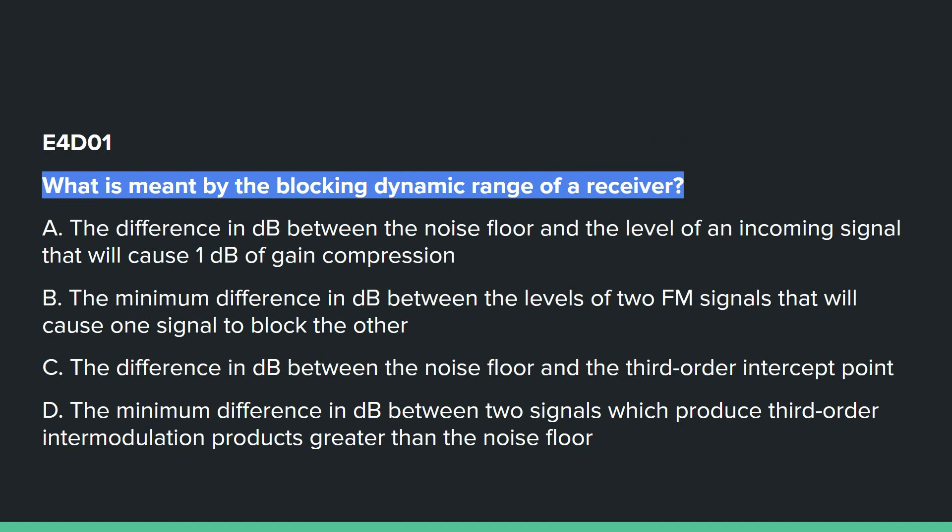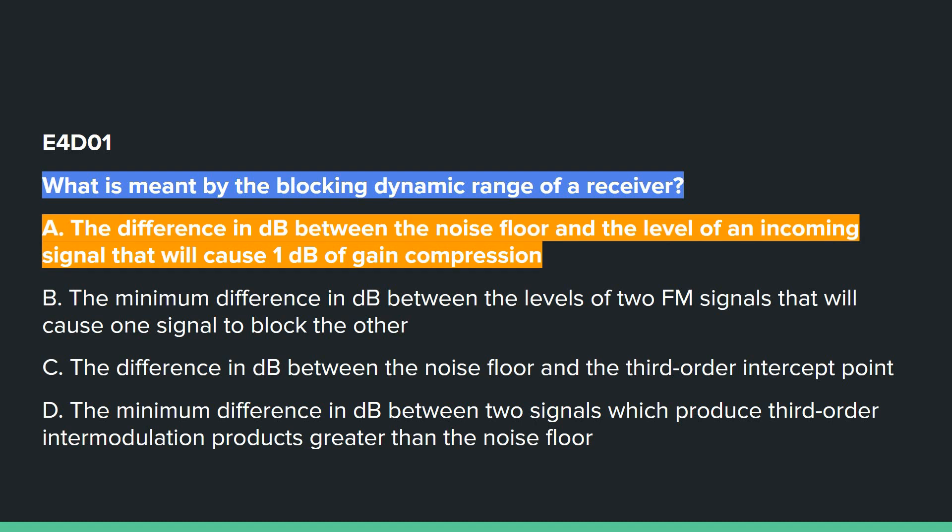E4D01: What is meant by the blocking dynamic range of a receiver? Answer A: the difference in dB between the noise floor and the level of an incoming signal that will cause 1 dB of gain compression.